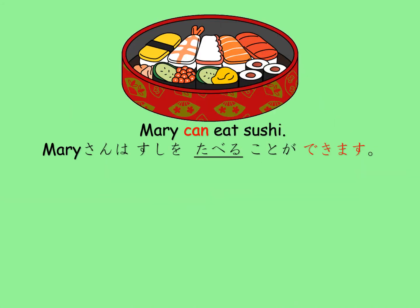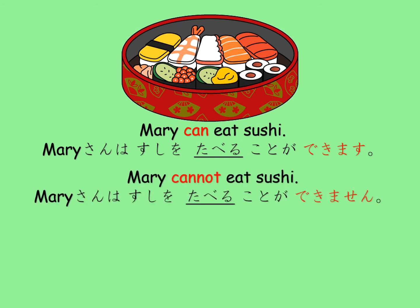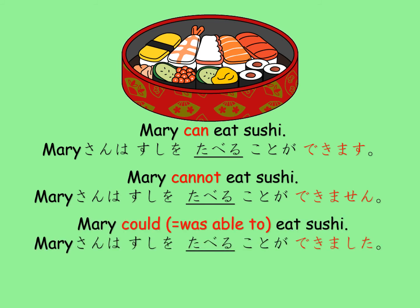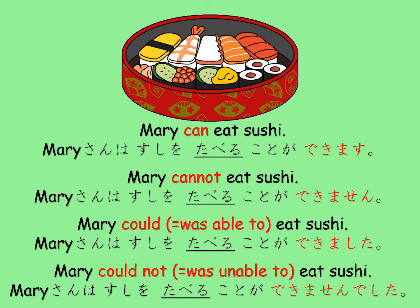Let's see how it changes with the example of being able to eat sushi. マリーさんは寿司を食べることができます means 'Mary can eat sushi.' Changing to できません: マリーさんは寿司を食べることができません means 'Mary cannot eat sushi.' マリーさんは寿司を食べることができました means 'Mary was able to eat sushi.' マリーさんは寿司を食べることができませんでした means 'Mary was unable to eat sushi.'